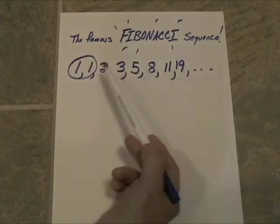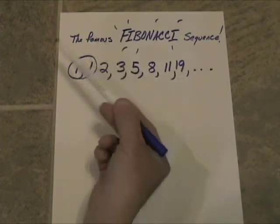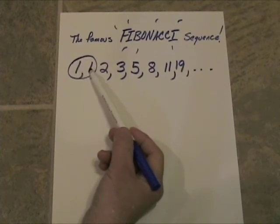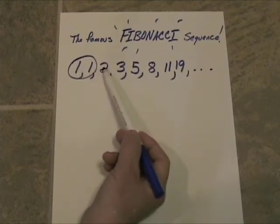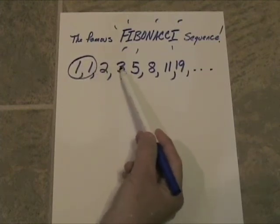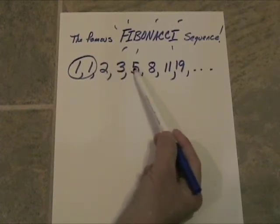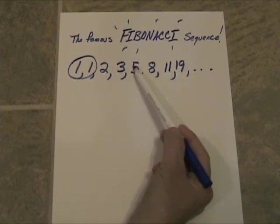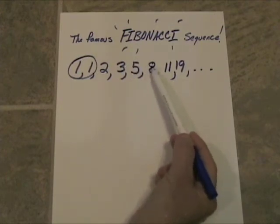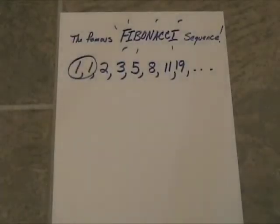Every term after the second term depends on the preceding 2. 1 plus 1 is 2. And then 1 plus 2 is 3. And 2 plus 3 is 5. And 3 plus 5 will generate 8. And so on, and so on. So now that you've seen Fibonacci, you'll know to look for it. And all kinds of variations of it come up on the SATs and things like that, and in general life.